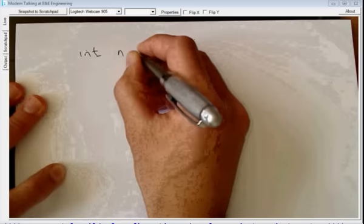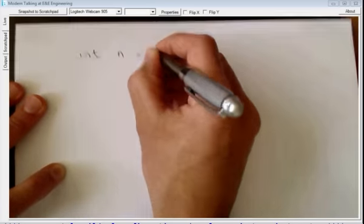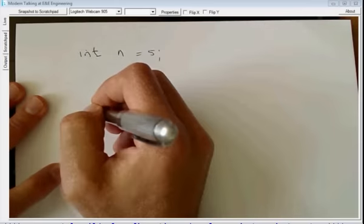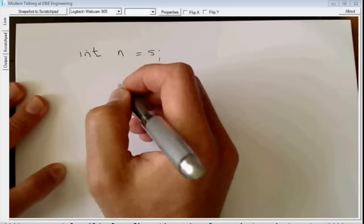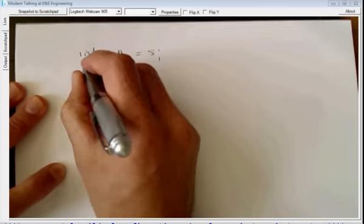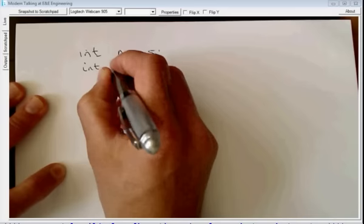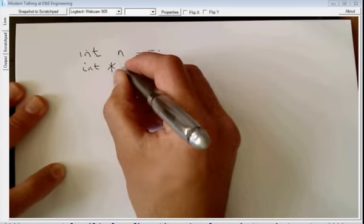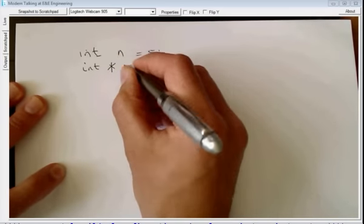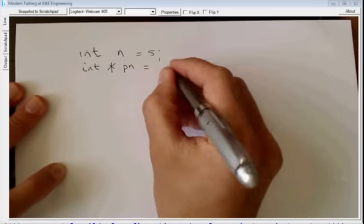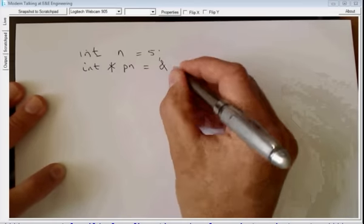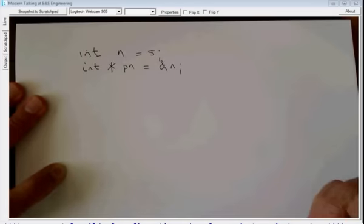So we would have said integer n make it equal to five and then we would have said okay I want to access this n through a pointer so I'm going to make an integer pointer and this integer pointer I will call pn and I will make it point to n. That's what we've done up to now.